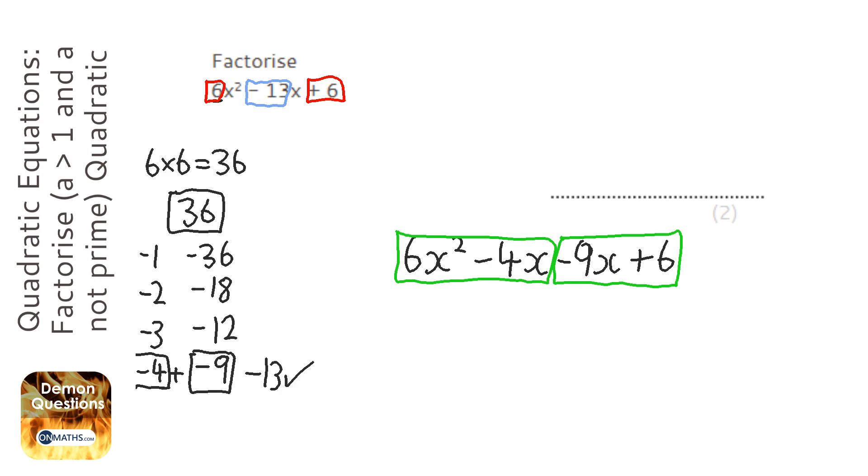So 6x squared minus 4x. So let's think, well, that's a 2, and they both have an x. I can divide out the 2x. And that will leave 3x minus 2 there. Excellent.